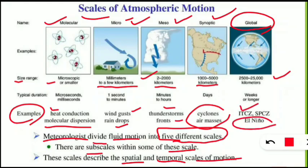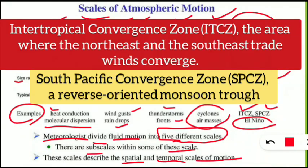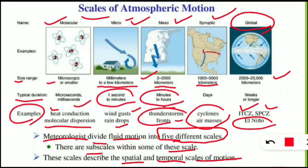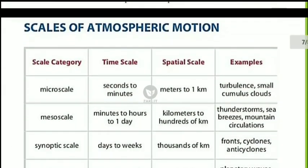At the synoptic scale, examples are cyclones and air masses. At the global scale, examples include El Niño, ITCZ (Intertropical Convergence Zone), and SPCZ (South Pacific Convergence Zone). Regarding typical durations: heat conduction lasts microseconds to milliseconds; wind gusts from seconds to minutes; thunderstorms from minutes to hours; cyclones from days to weeks; and global phenomena like El Niño, ITCZ, and SPCZ can last weeks or more.